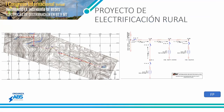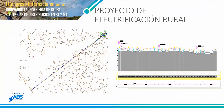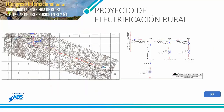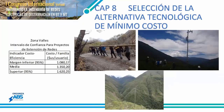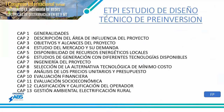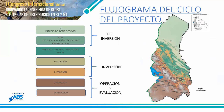Después de todo ese análisis, el resultado es un proyecto de electrificación rural que cuenta con un ruteo de la línea, diagramas unifilares, topologías, precios unitarios y entre otros. Eso sería lo que lleva el proyecto de electrificación rural. Después hay una etapa que es la de inversión, donde uno ya ha aprobado el estudio técnico de preinversión del proyecto.